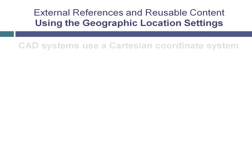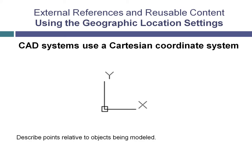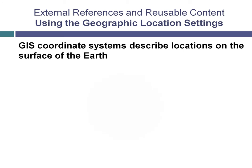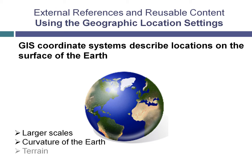CAD systems use Cartesian coordinate systems, such as the WCS or UCS, to describe points relative to the object being modeled, not relative to the surface of the earth. GIS coordinate systems, on the other hand, describe locations on the surface of the earth. GIS coordinate systems handle significantly larger scales than CAD systems, and also deal with issues such as the curvature of the earth and terrain, which are insignificant to CAD coordinate systems.